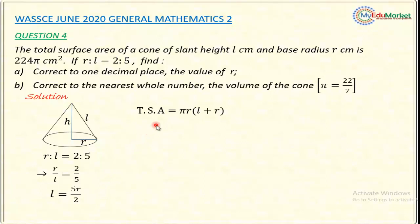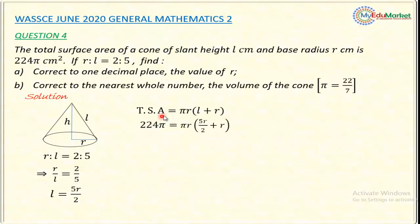The total surface area of the cone is the curved surface area plus the area of the circular base, given by π R(L + R), which expands to πRL + πR². Substituting the total surface area as 224π and replacing L with 5R over 2, I get: 224π = πR(5R/2 + R).